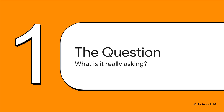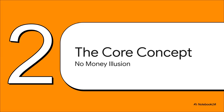First up: deconstructing the question. What's really going on here? It's easy to see this and think it's a math question, but it's so much more than that. At its heart, this is testing one simple but super important idea — that rational people make their decisions based on real value, not just the numbers on a price tag. And that brings us right to the core concept, which has one of the coolest names in economics: the absence of money illusion.